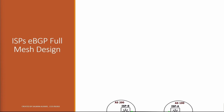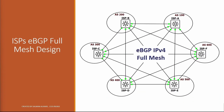Here we have ISPs eBGP full mesh design — 6 ISPs connected to each other full mesh, each ISP connected to every other one. So here we need n × (n-1) / 2. With 6 ISPs, that is 6 × 5 / 2 = 15 peerings, meaning 5 neighborships per ISP. Of course, if we increase the number of ISPs, the peering number will increase as well.